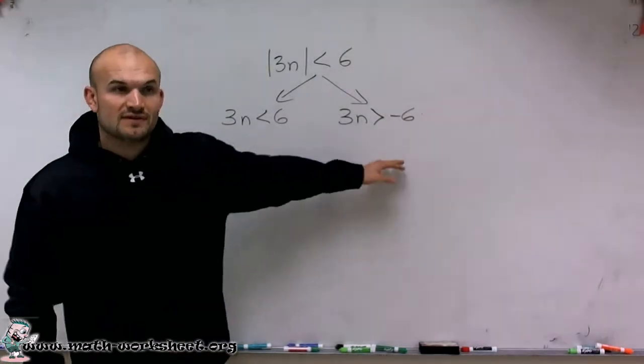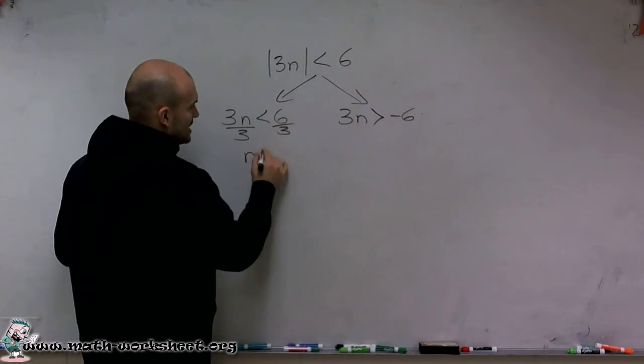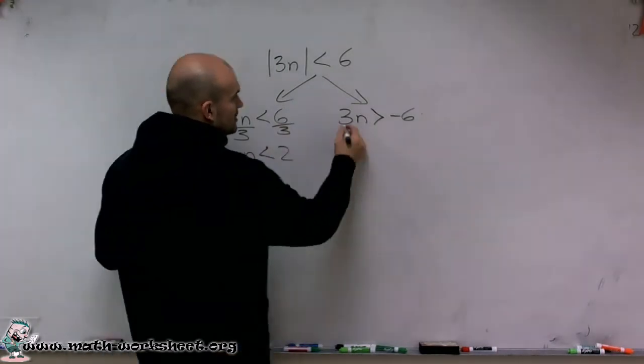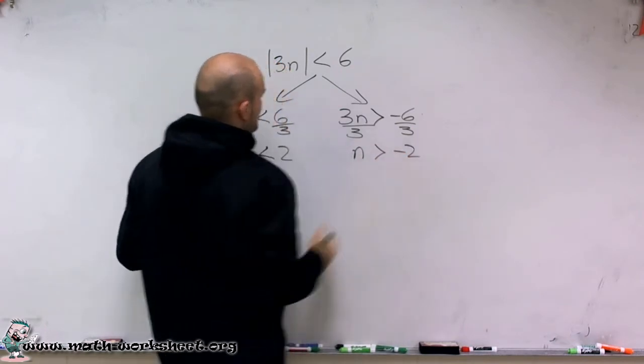Now, to solve and graph the inequality, I simply solve for my variable, divide by 3 on both sides, I get n is less than 2, divide by 3, and say n is greater than negative 2.